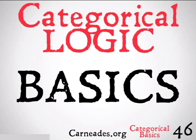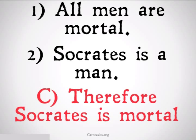With propositional logic, we had a lot of rules that let us prove the validity of many different arguments, but we were still unable to prove the validity of arguments such as the following: All men are mortal. Socrates is a man. Therefore, Socrates is mortal. This is a really classic argument, but we don't have any disjunctions, conjunctions, if-thens, equivalences, or negations in it.